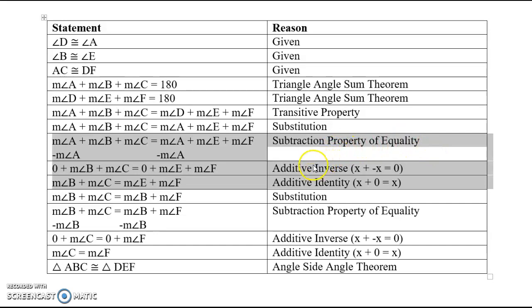to get rid of the measure of angle A from both sides, which gets us one step closer to getting down to just C equals F. We want just angle C is congruent to angle F. That's what we're looking for.